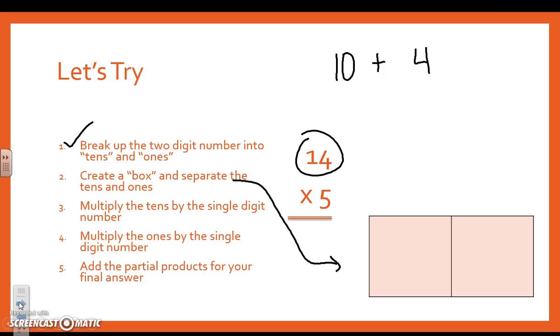Now I'm going to create a box to separate the tens and ones. It is created for you already. I'm going to multiply the tens and ones by the single-digit number. So I'm going to put my broken up number across the top. And I'm multiplying by 5. So the 5 goes on the side. Now this is kind of like battleship. The 10 is going to come straight down. And I'm going to do 10. And the 5 is going to come straight across times 5. The 4 is going to come straight down. And then the 5 is going to come across so I can multiply.